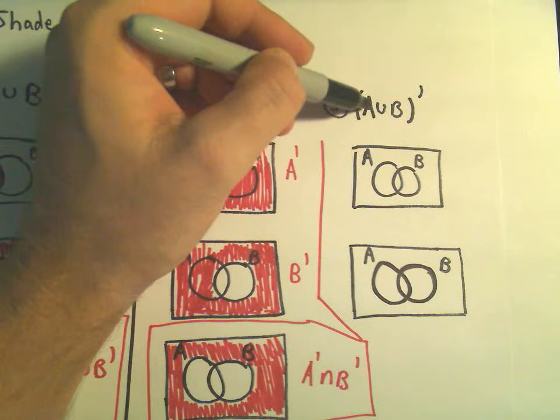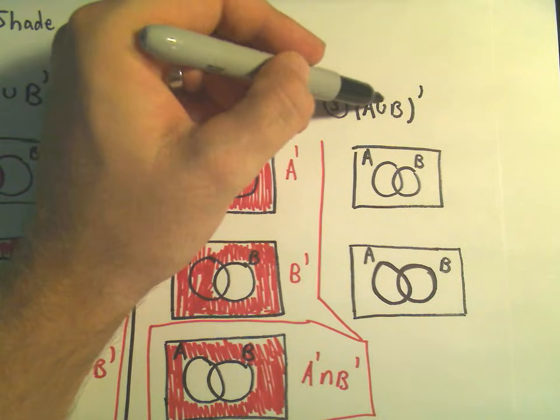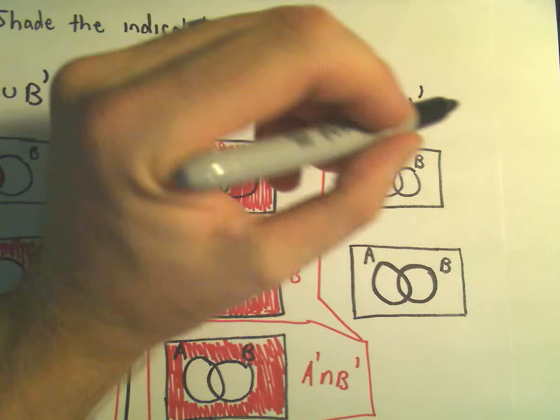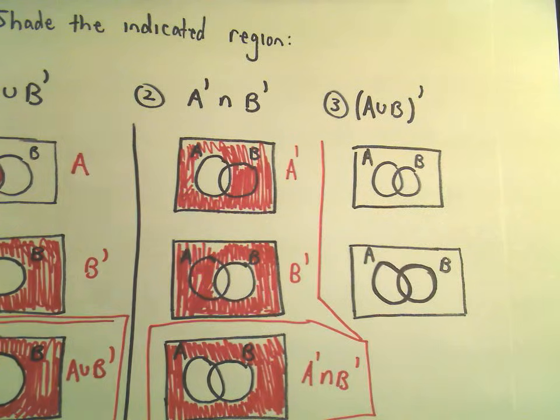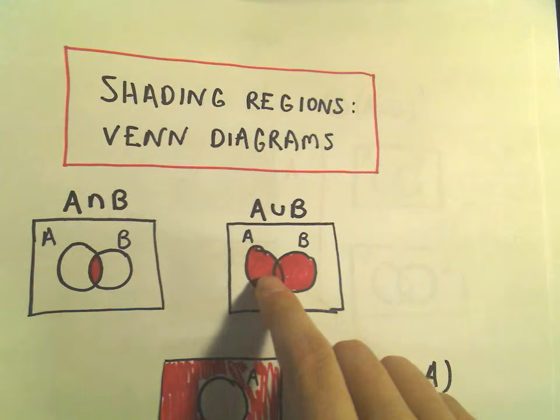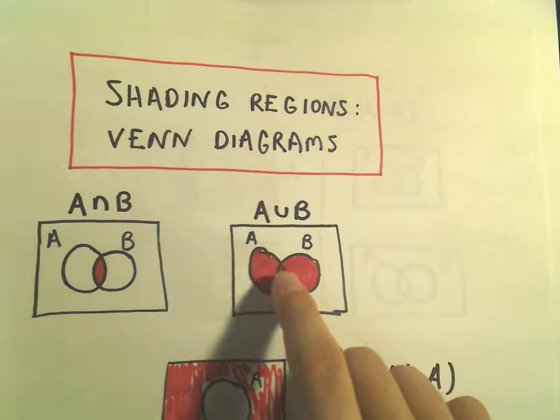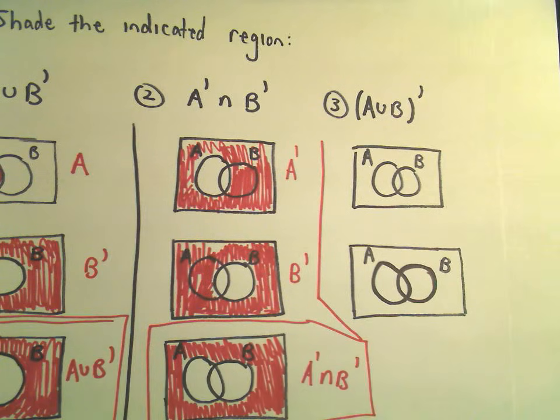So suppose we want to do NOT the set A or B. Well, we said at the very beginning, if we do A or B, you're going to get shaded if you're in circle A or in circle B. So I'm going to first shade that in.